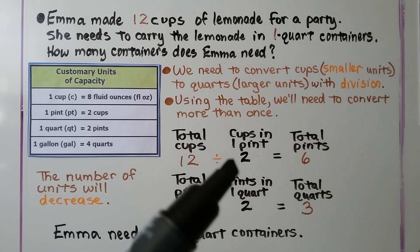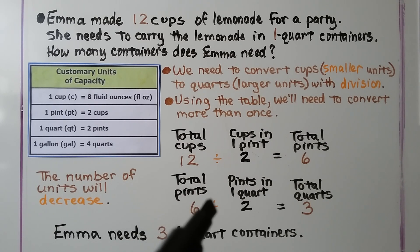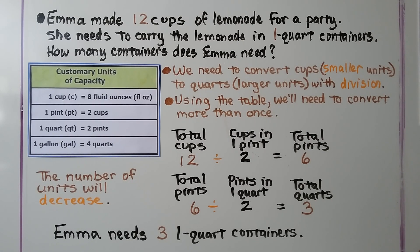She has 12 cups total. There are two cups in one pint, so 12 divided by 2 equals six pints. Then we divide six pints by two pints in one quart, which equals three quarts. So Emma needs three one-quart containers to bring the lemonade to the party.